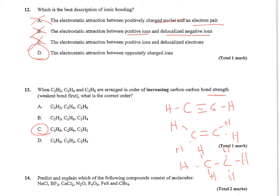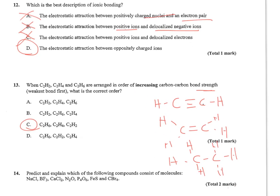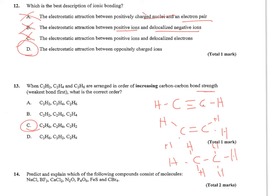Question number 12 wants to know which is the best description of ionic bonding. Ionic bonding is all about the electrostatic attraction between oppositely charged ions. So A, B, and C aren't quite phrased correctly. Electrostatic attraction between charged nuclei? No, it's a charged ion. And an electron pair? No, an electron pair is not an ion.